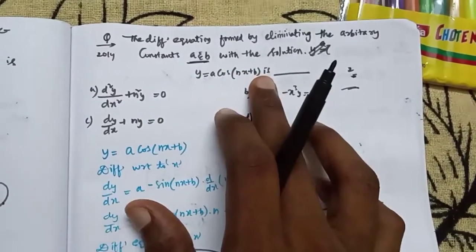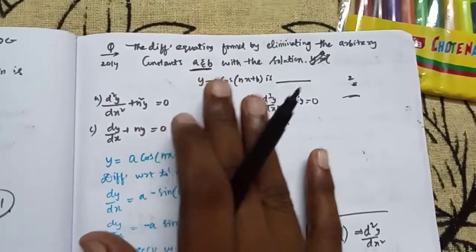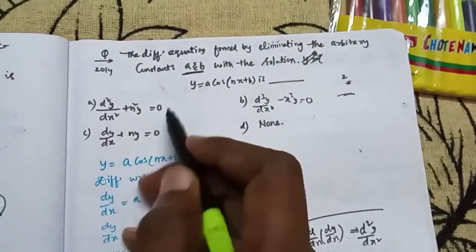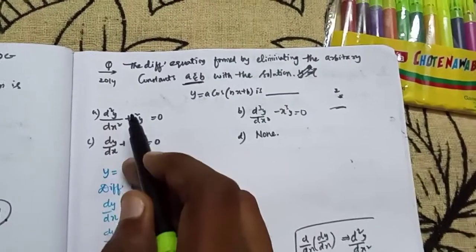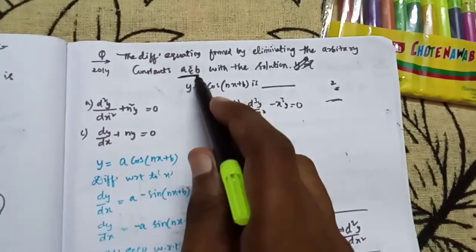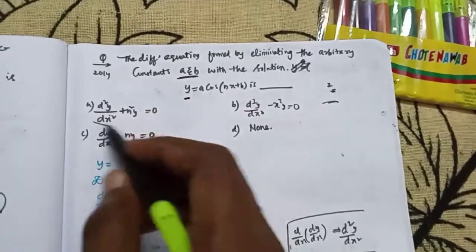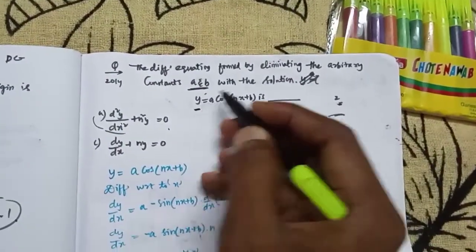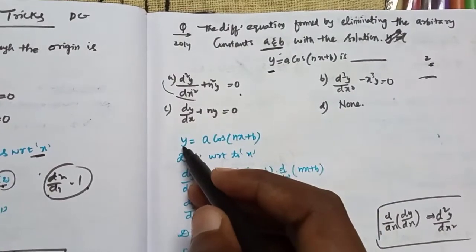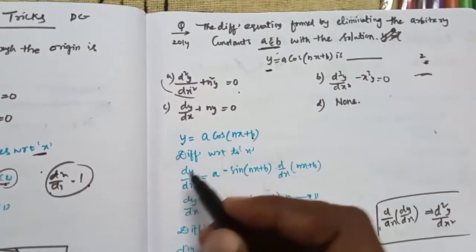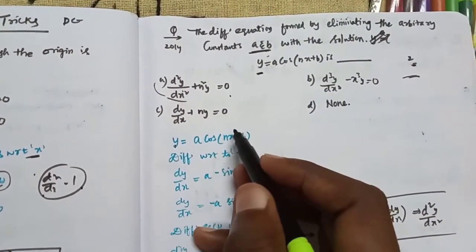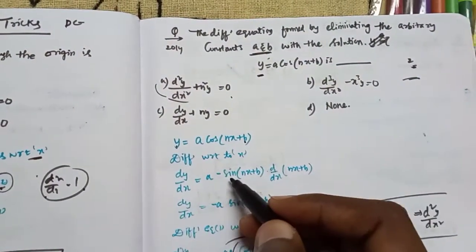Next, the differential equation formed by eliminating arbitrary constants a and b. Since there are two constants, we need to differentiate two times. We can use the equation y is equal to a·cos(nx + b). This has two constants a and b. Let's differentiate: dy/dx equals a into the derivative of cos(nx + b), which is minus sin(nx + b) into n.